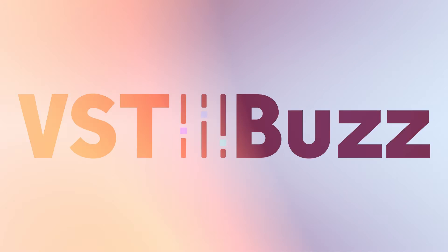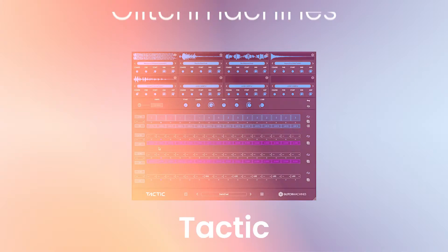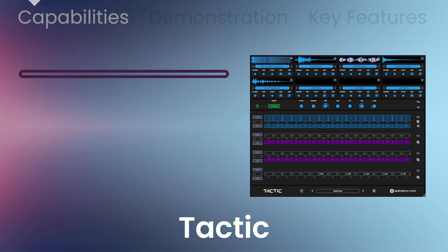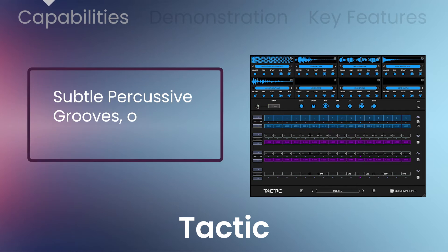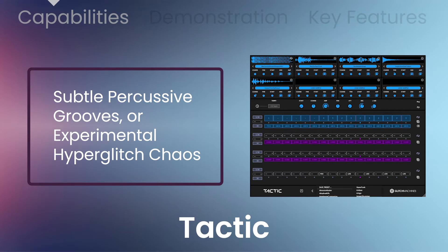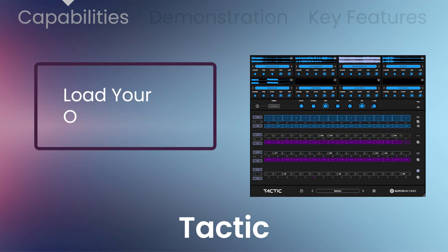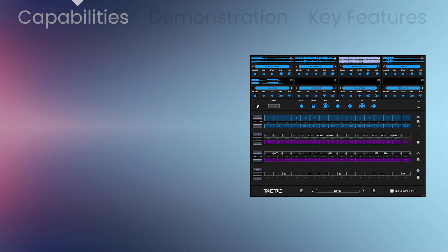VST Buzz presents 82% off TACTIC by Glitch Machines, a phrase generator geared towards evolving sequences and metamorphic patterns. With features such as per-step probability, per-step parameter value designations, and per-step randomization, TACTIC gives you all the tools necessary to create subtle percussive grooves or experimental hyper-glitch chaos. Load your own samples and pair it with any of your favorite processors and effects chains to fully customize.